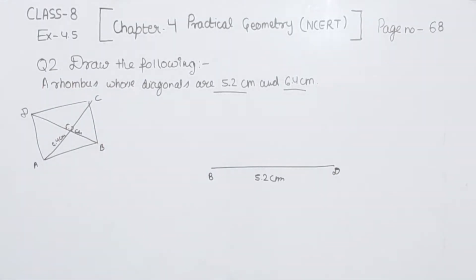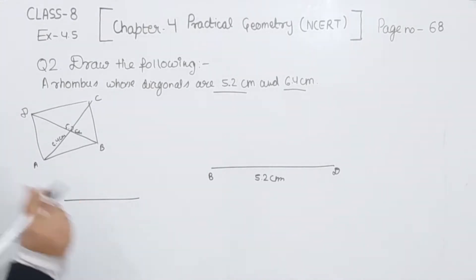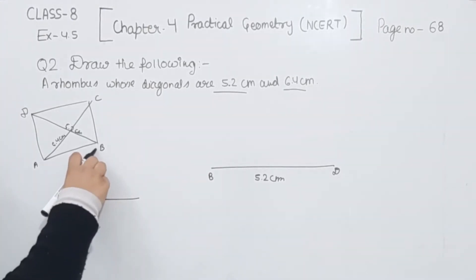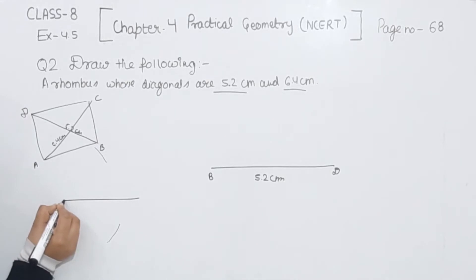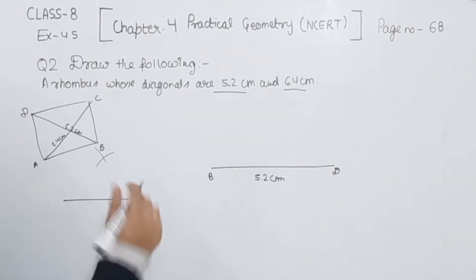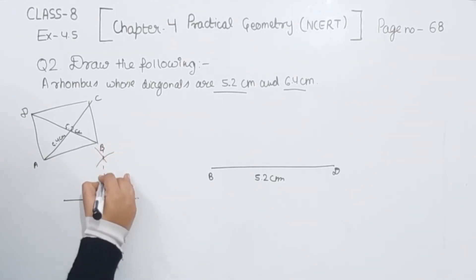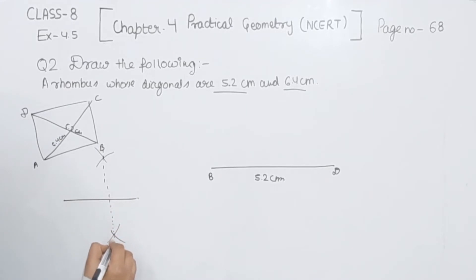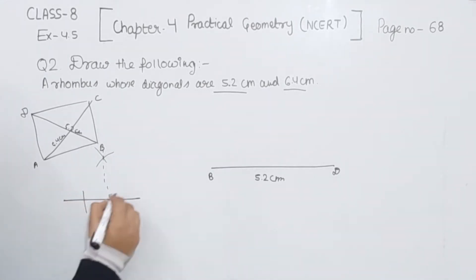Now we are going to draw the perpendicular bisector. Let me first teach you how to draw the perpendicular bisector. This is the line segment. We have to take the compass more than half and draw one arc on the upper side of the line and a second arc on the lower side, taking one endpoint as center. Then with the same measurement, taking the other endpoint as center, we draw two arcs — one on the upper side and one on the lower side. Now we join the intersecting points. This will be the perfect perpendicular bisector, dividing the line segment into two equal parts.